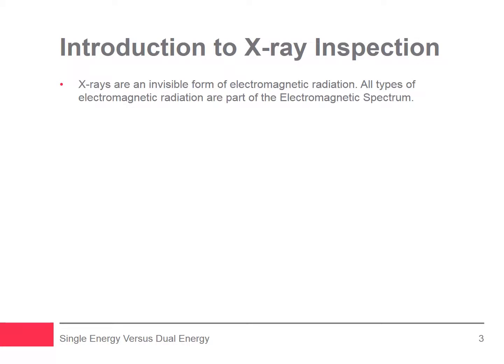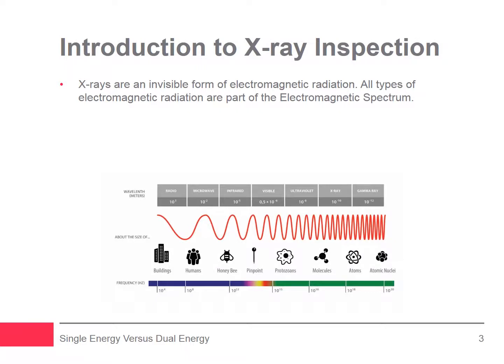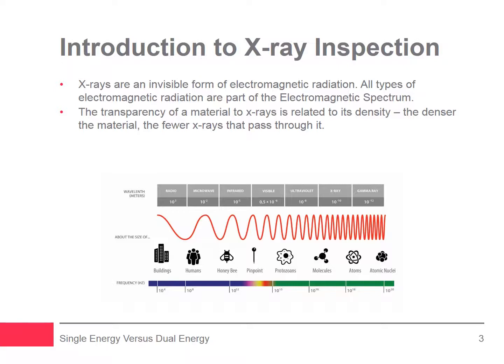X-rays are one of several naturally occurring sources of radiation and are an invisible form of electromagnetic radiation, like radio waves. All types of electromagnetic radiation are part of a single continuum known as the electromagnetic spectrum. The short wavelength of x-rays enables them to pass through materials that are opaque to visible light. However, they don't pass through all materials with the same ease. The transparency of a material to x-rays is broadly related to its density — the denser the material, the fewer x-rays pass through it. Dense foreign bodies such as glass, bone, and metal show up because they absorb more x-rays than the surrounding product.